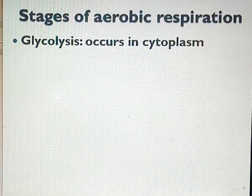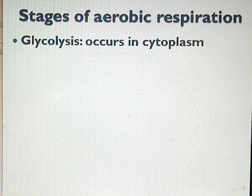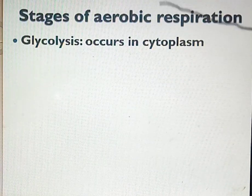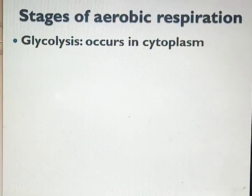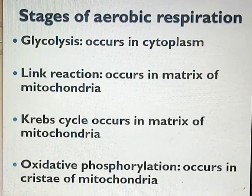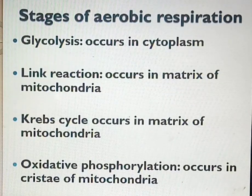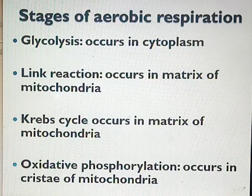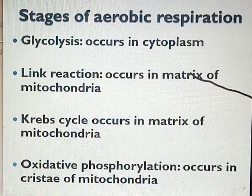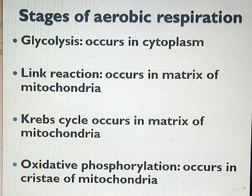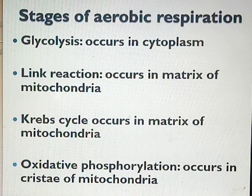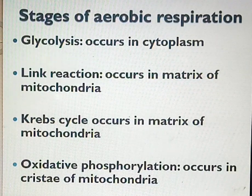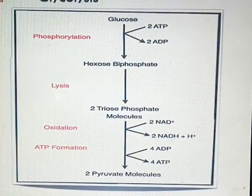Respiration can be of two types: aerobic and anaerobic. Aerobic respiration takes place in the presence of oxygen and has four stages. First is glycolysis, which takes place in the cytoplasm. Second is the link reaction, which takes place in the matrix of the mitochondria. Krebs cycle also takes place in the matrix, and the last stage — oxidative phosphorylation — takes place in the cristae.